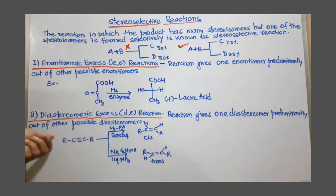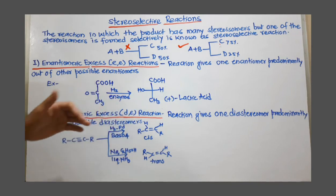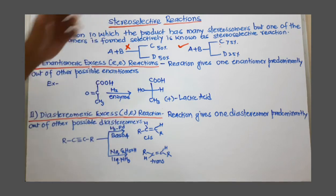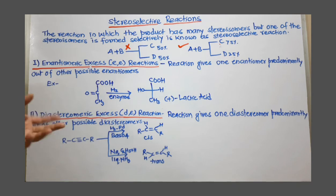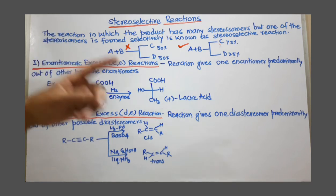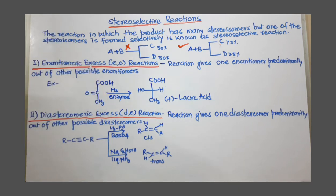Another is diastereomeric excess reaction or diastereoselective reaction. Here, out of two diastereomers, one is selected predominantly. Then this reaction is called diastereomeric excess reaction.